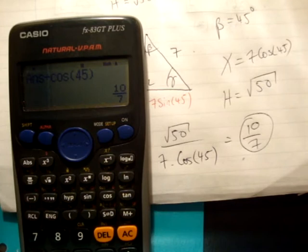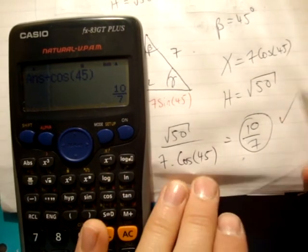Now let's just check the back of the book to see if we have the correct answer. Exercise 1c question 5, h over x is equal to 10 over 7, and we got the correct answer.